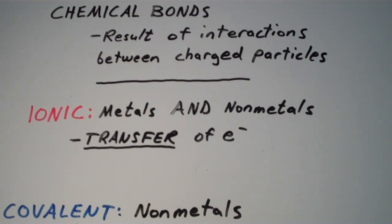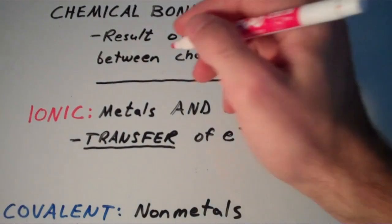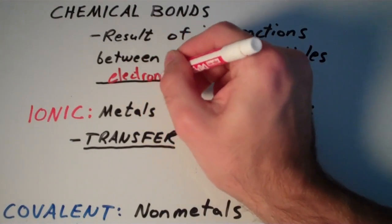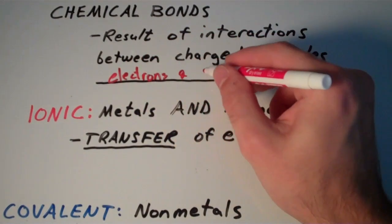Chemical bonds are the result of interactions between charged particles within atoms. So what do I mean when I say charged particles? I'm talking about the electrons and the protons.